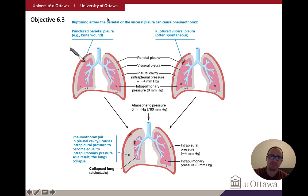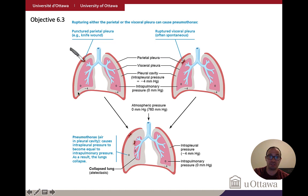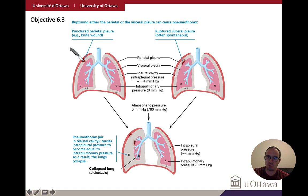For example, if someone is stabbed with a knife, the atmospheric pressure on the outside will equalize with the intrapleural space, bringing it from negative four to zero. Once these pressures equalize, the tendency is for the lung to collapse. The same can happen with an internal injury. Importantly, each lung is surrounded by its own pleura, so if one lung collapses, the other can still function.